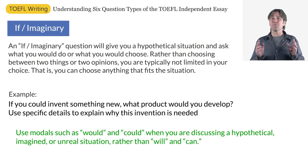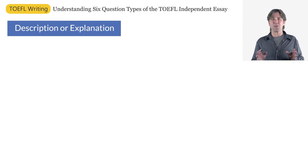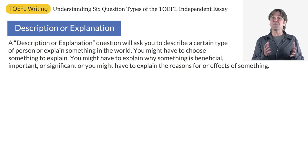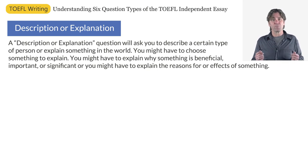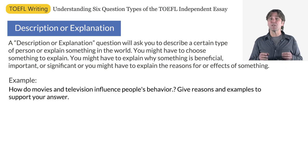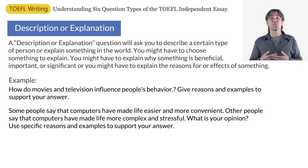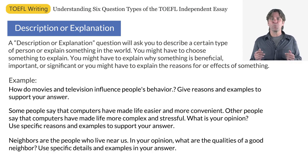The final question type using the five-paragraph structure is the description or explanation question. A description or explanation question will ask you to describe a certain type of person, especially the good qualities of a person, or explain something in the world. You might have to choose something to explain, or you might be given something specific to explain. You might have to explain why something is beneficial, important, or significant, or explain the reasons for or effects of something. Here are some examples: How do movies and television influence people's behavior? Give reasons and examples to support your answer. Some people say that computers have made life easier and more convenient; others say computers have made life more complex and stressful — what's your opinion? Neighbours are people who live near us — in your opinion, what are the qualities of a good neighbour?